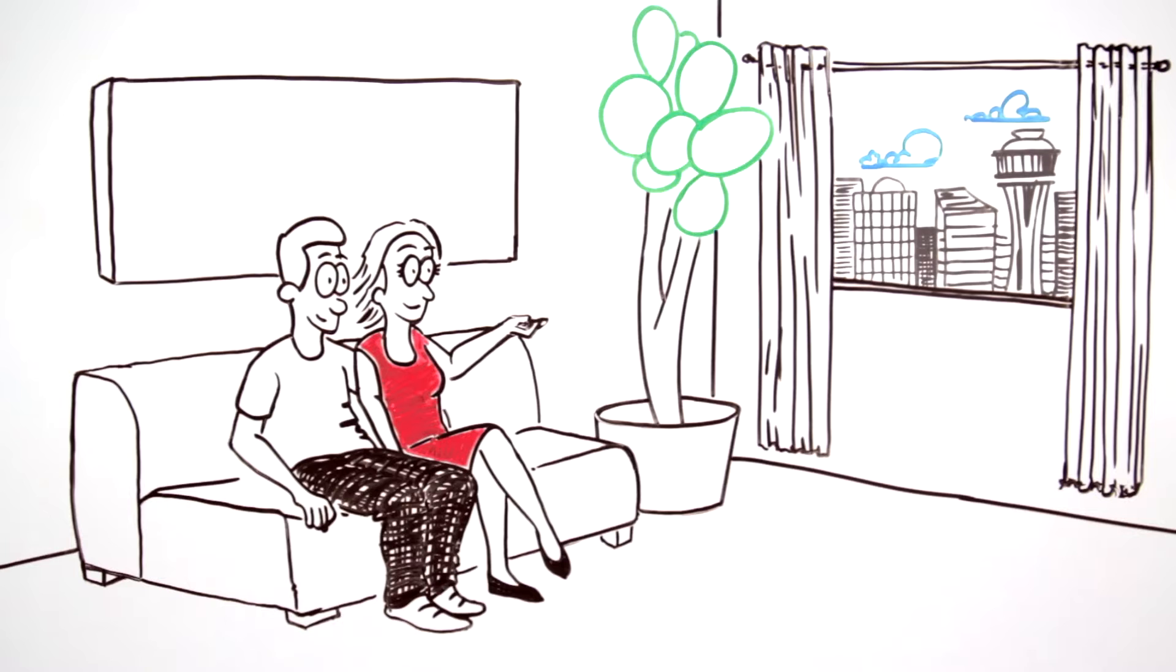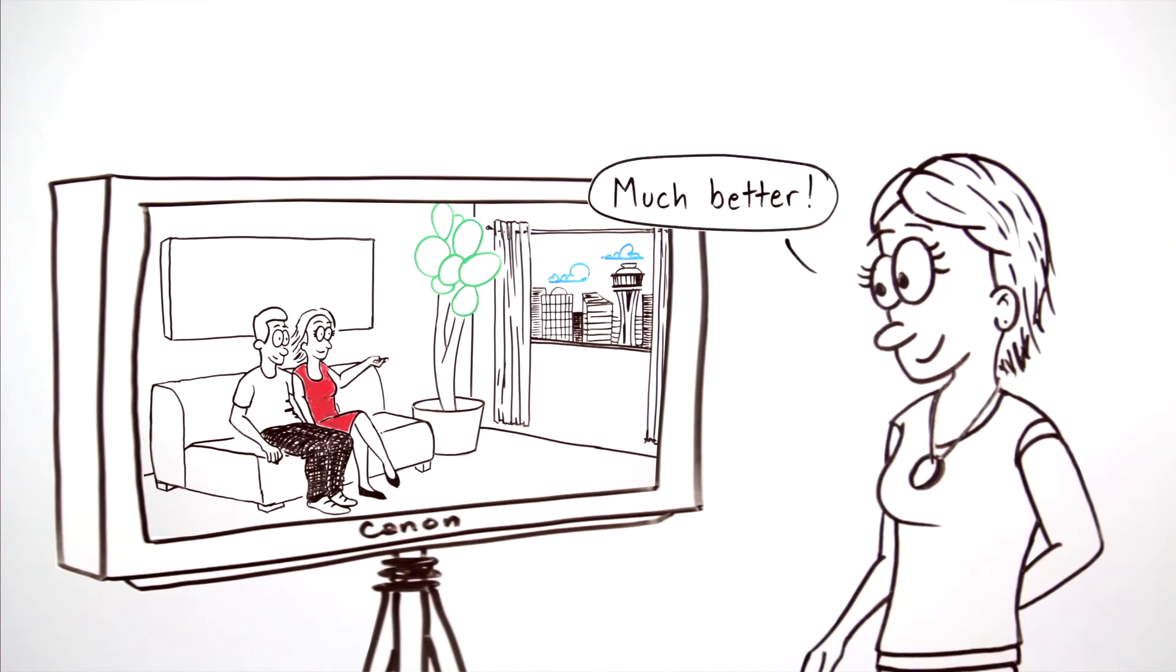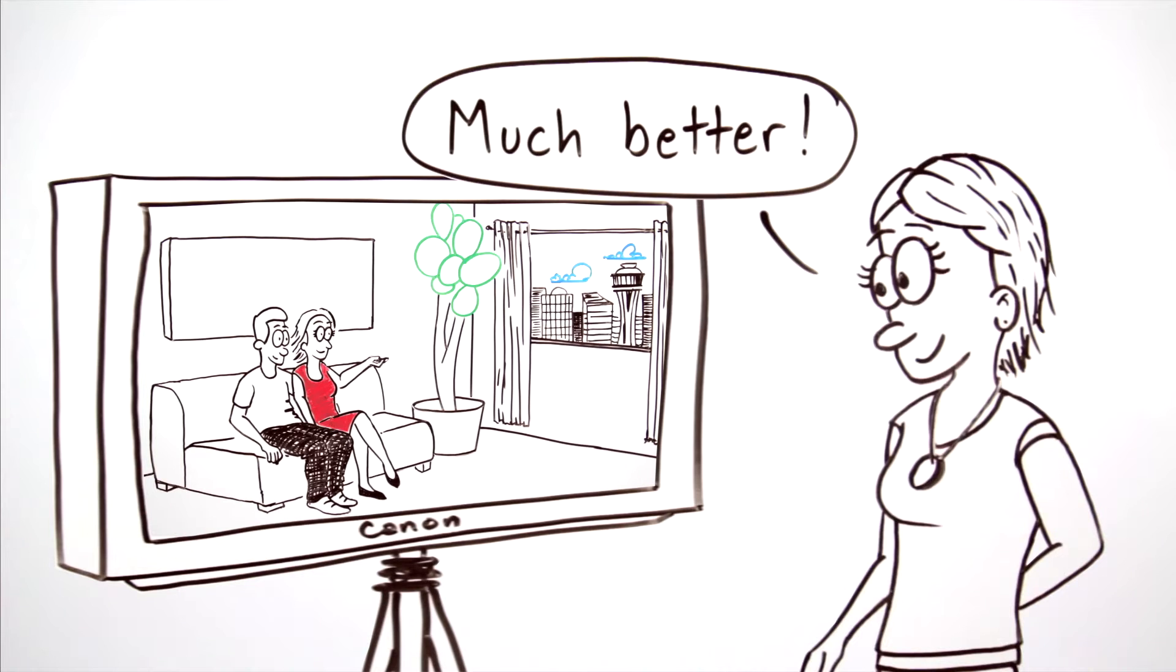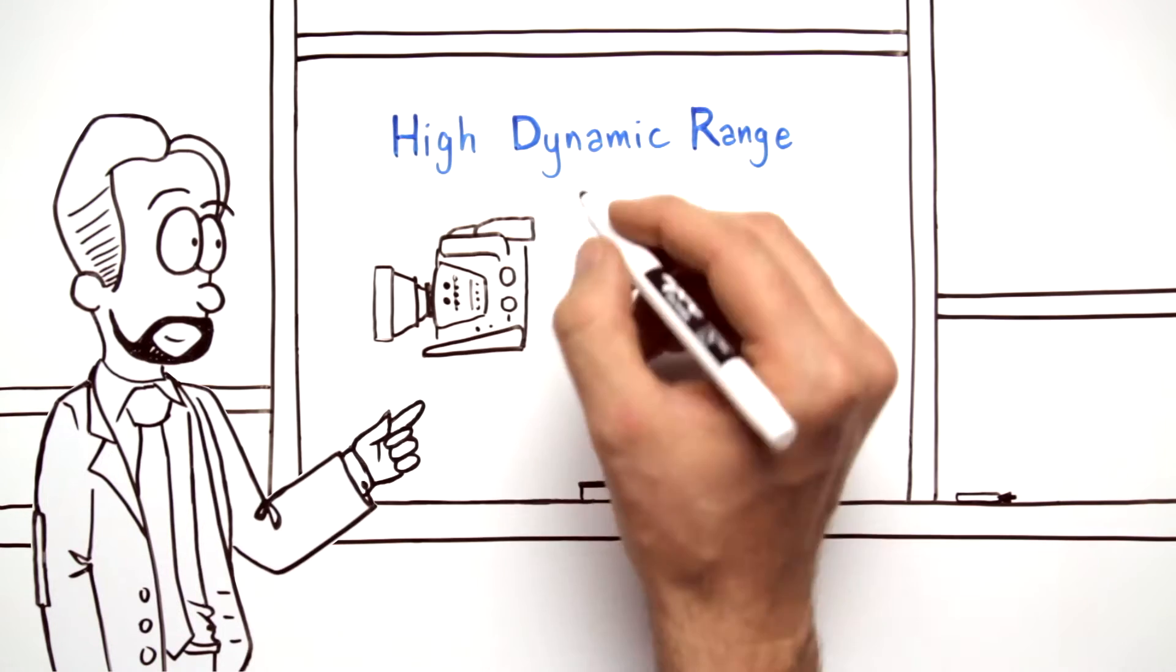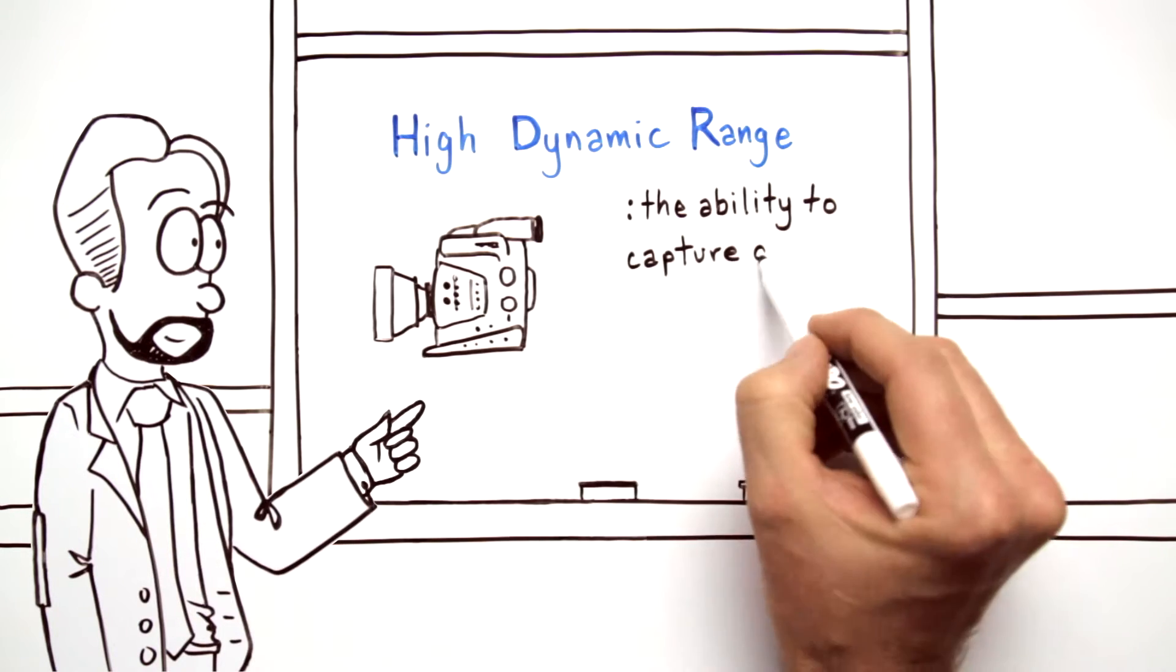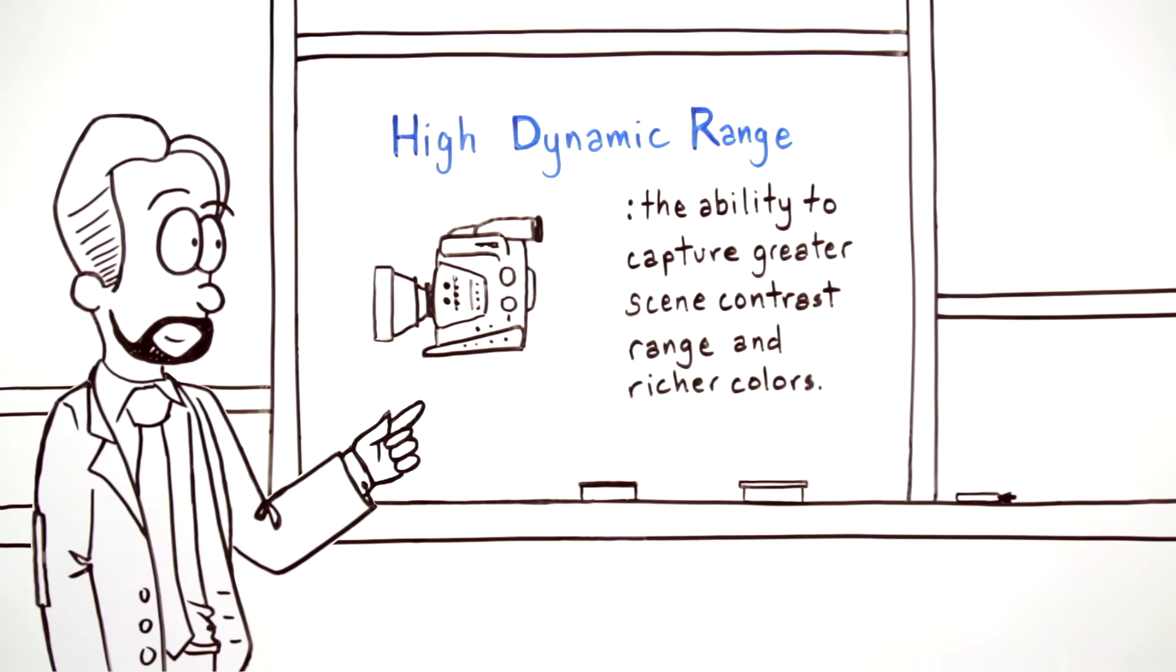Fortunately, recent technological advances in HDR motion imaging allow you to have your highlights and your shadow details too. High dynamic range entails cutting-edge technologies that extend the video camera's capability to capture greater scene contrast range and richer colors.